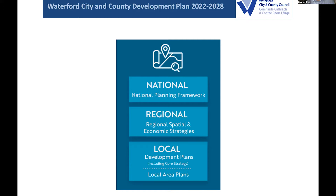We're preparing a plan for Waterford city and county. Below that, there's another tier of what we call local area plans. Once we have our county and city development plan in place, we'll look at preparing a suite of local area plans that will deal with specific areas — towns like Tramore, Portlaw, Dungarvan — places that had plans in the past that we will be revising and updating in light of the overarching policy and county plan.